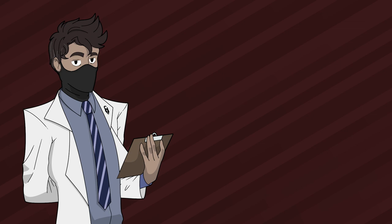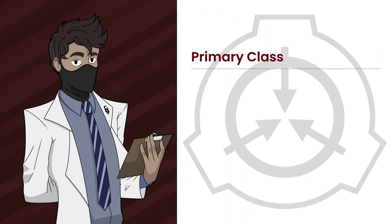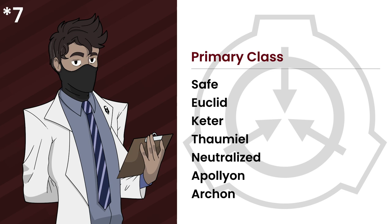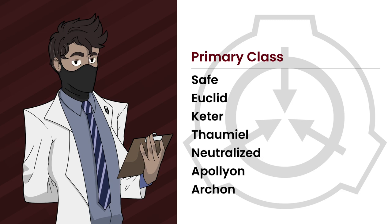In the object class, they have the primary class. Within this primary class, we have Safe, Euclid, Keter — whichever you want to pronounce it — Thaumiel, Neutralized, Apollyon, and Archon. These are the official, non-canon object classes within the SCP Foundation, but what do they exactly mean?